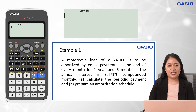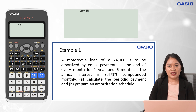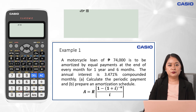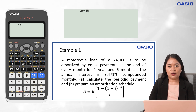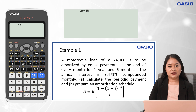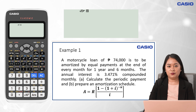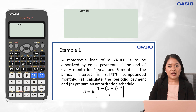Before constructing an amortization schedule, we need to calculate first the periodic payment. Since this problem involves simple ordinary annuity, we will use this formula: the present value of simple ordinary annuity equals the periodic payment multiplied by the quantity of 1 minus the sum of 1 and i raised to the negative n, all over i. Here, i is the periodic rate computed by dividing the annual interest rate by the number of conversion periods per year, and n is the total number of conversion periods for the whole term, computed by multiplying the conversion periods per year by the period of time in years.